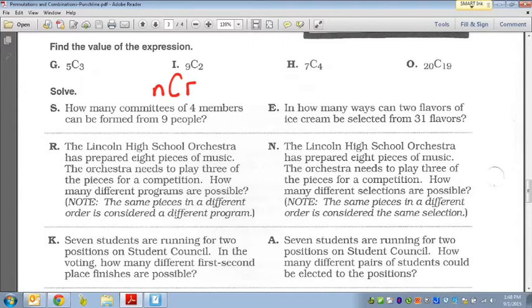But if I just wanted to know how many different ways can five finishers finish the race out of a hundred people, we don't care if there's first or second. We just want to know who finished. So that would be a combination.